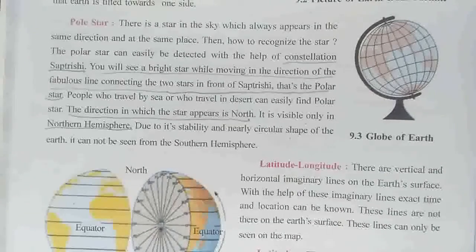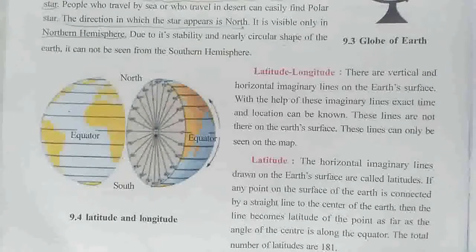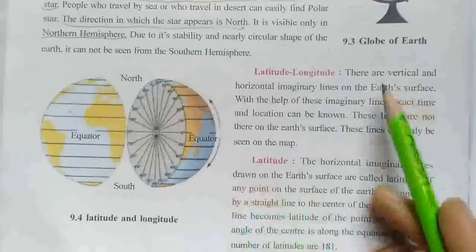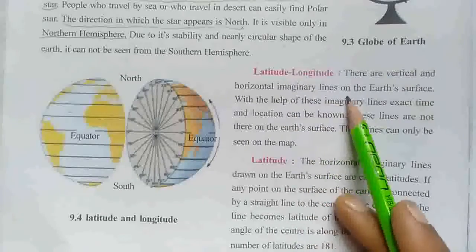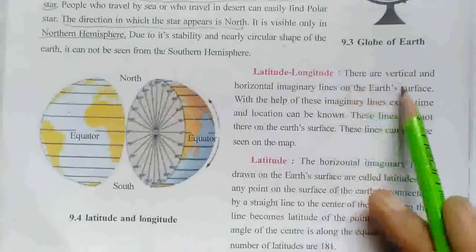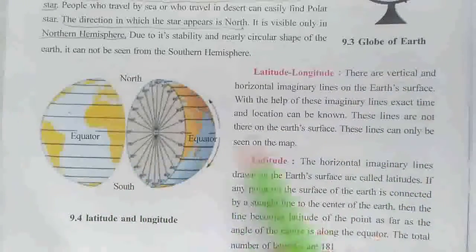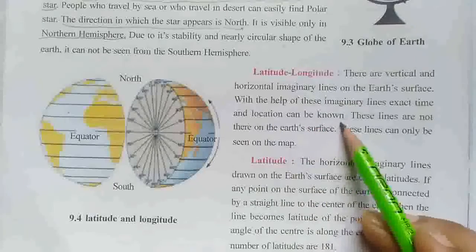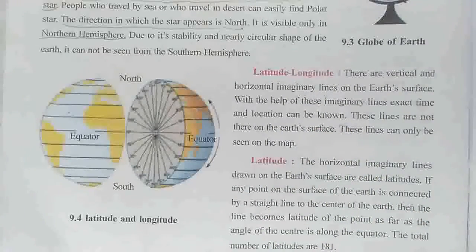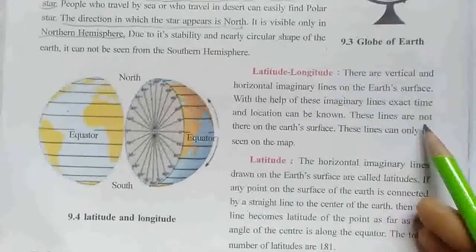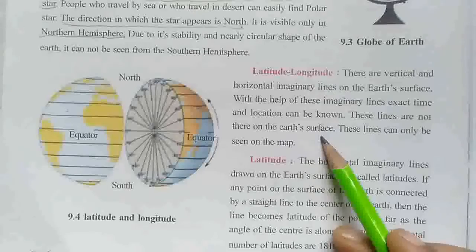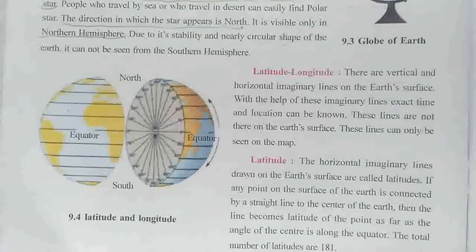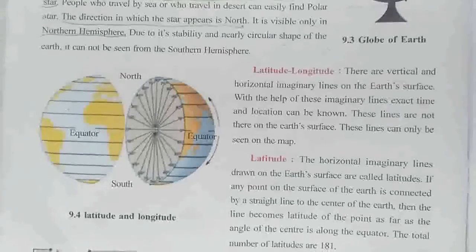After that we will study about latitude and longitude. Earth's globe has some lines on the Earth's surface. There are vertical and horizontal imaginary lines on the Earth's surface. With the help of these imaginary lines, exact time and location can be known. These lines are not actually on the Earth's surface — they can only be seen on a map. The first type of lines we will see are latitudes.